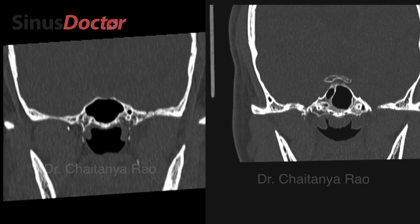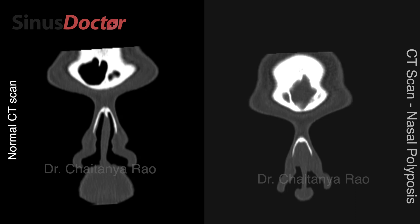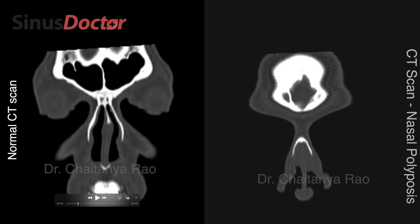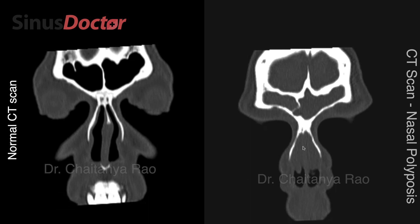Now let us discuss the next case. This is a patient whom I recently operated on — she is a patient having severe nasal polyposis. Coming to the scan: this is the left frontal sinus. These are the frontal sinuses of the normal patient — compare that to the patient having severe nasal polyposis, where you can see both sinuses are completely filled with pus and polyps, with no space for air at all. In a normal scan, there is a black column through which we can breathe. For this patient, the polyps have completely occupied the nasal cavity, and only a very small black column remains through which she can breathe.